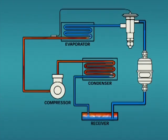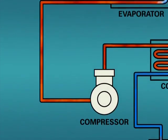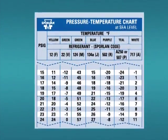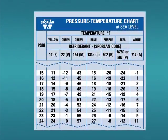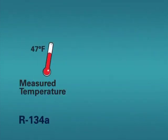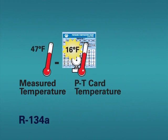As a second example, let's take readings at the compressor inlet. Our pressure gauge reads 16 PSI and our measured temperature is 47 degrees Fahrenheit. To calculate our superheat, we again reference our PT card. 16 PSIG on the PT card indicates a temperature of 16 degrees Fahrenheit. The difference between 47 degrees Fahrenheit measured temperature and 16 degrees Fahrenheit from the card is 31 degrees Fahrenheit superheat.